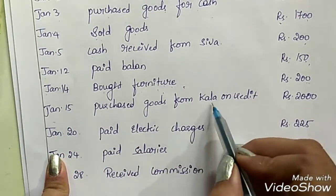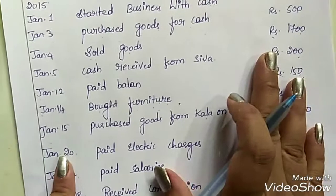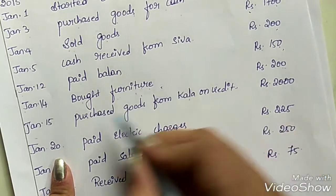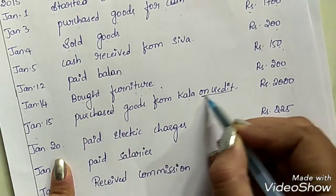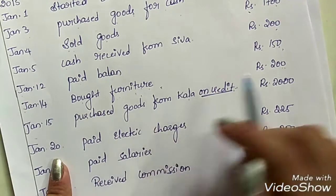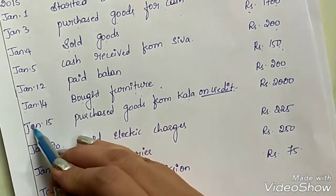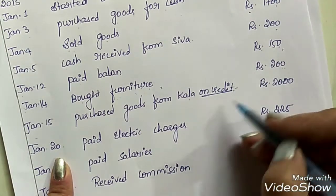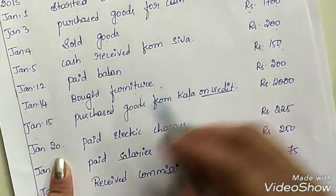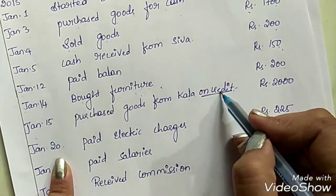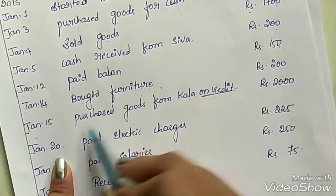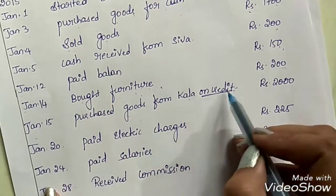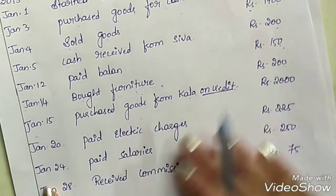On January 15th, purchased goods from Kala on credit. We know that in a cash book, credit transactions are not recorded. Since it is clearly given that this purchase is made on credit, this transaction cannot be recorded in the cash book — it should go into the purchase book. Just omit this transaction and move on to the next.